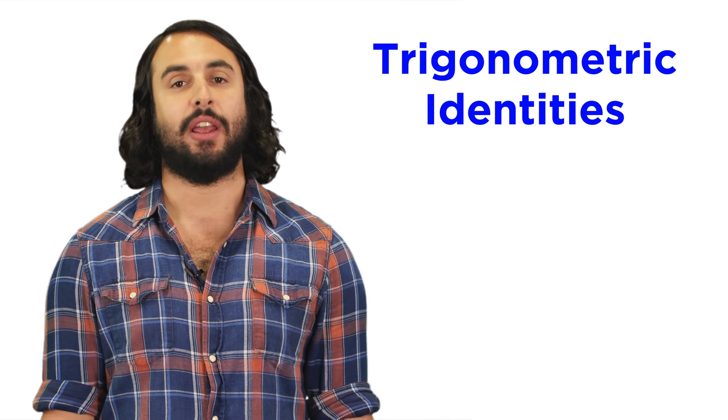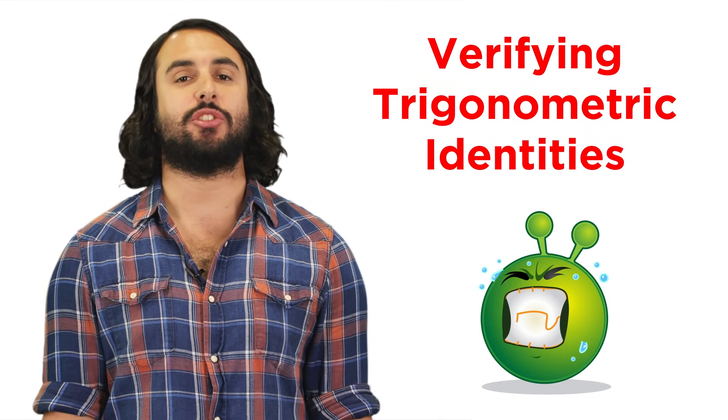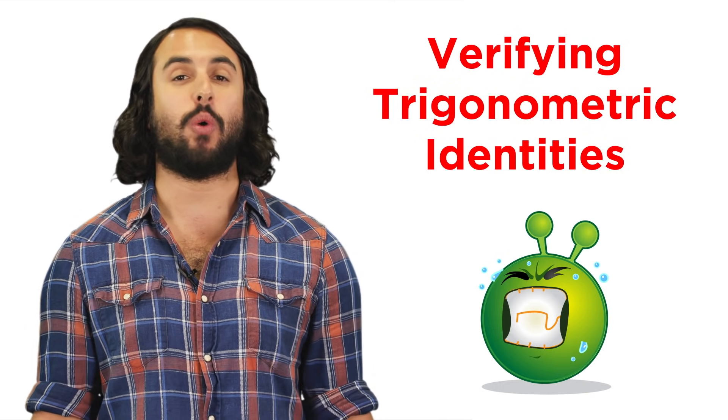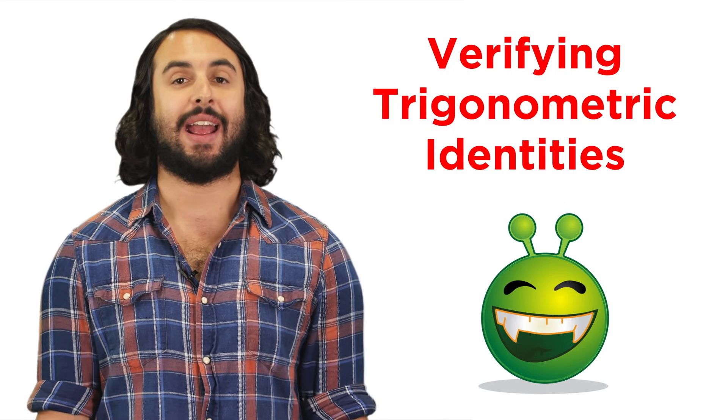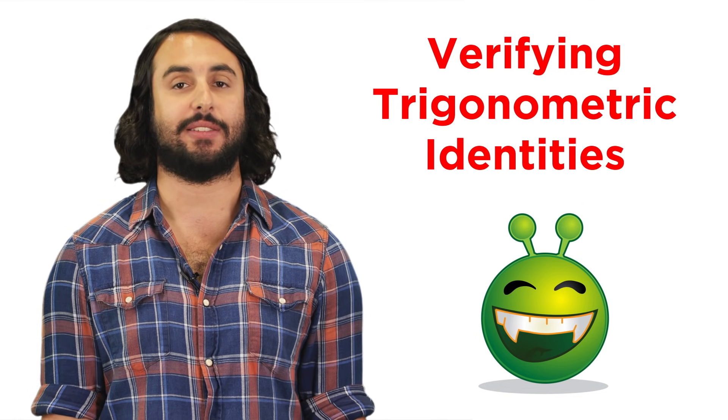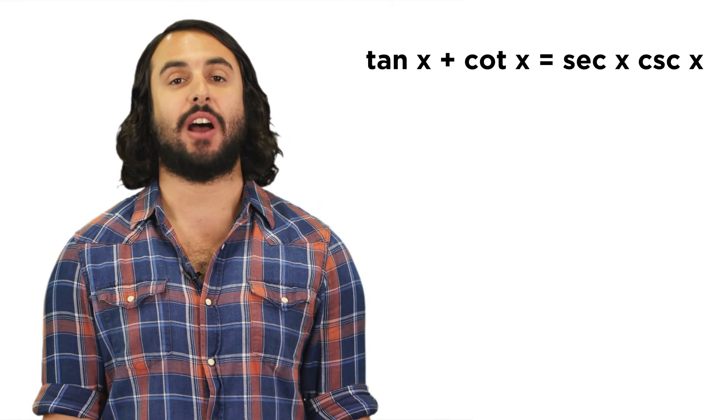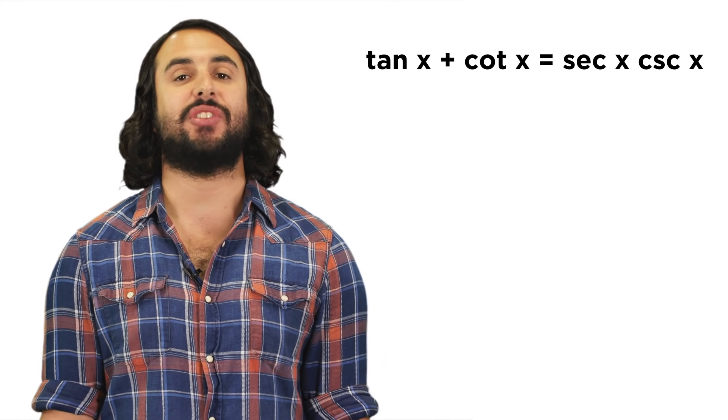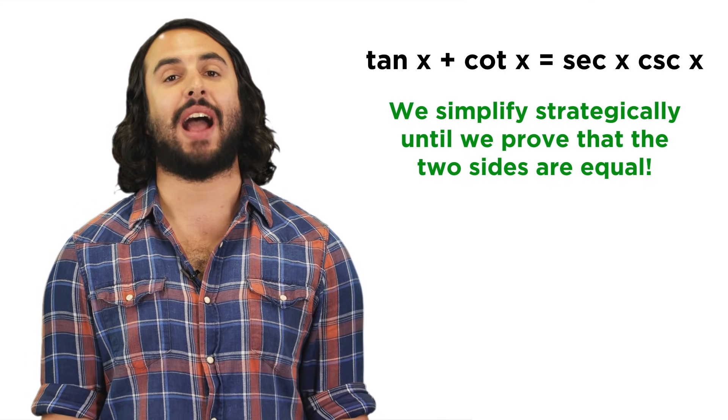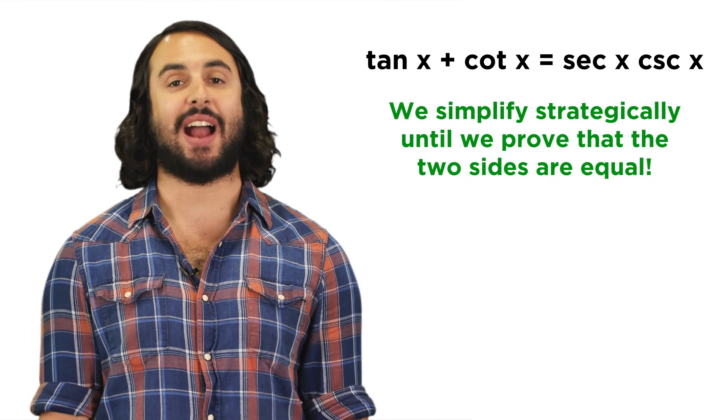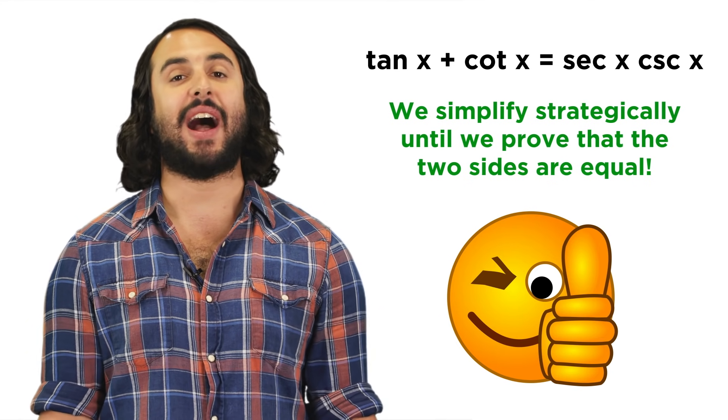We know a lot about trig functions now, including a number of identities they are involved in. This brings us to an area in trigonometry that can initially be quite infuriating, but it becomes incredibly satisfying once you get good at it, and that's verifying trig identities. The way this works is that we can have an equation with a bunch of trig functions on both sides. Sometimes this can be very messy, but we just simplify terms by applying certain identities until both sides of the equation say the same thing. Once we have done this, we have verified the identity.